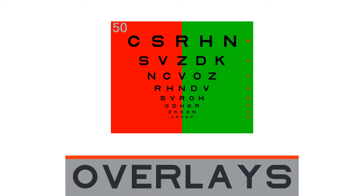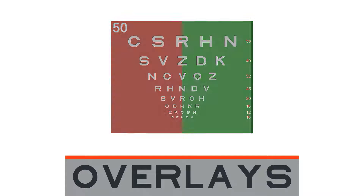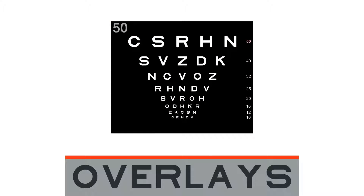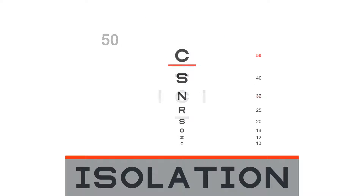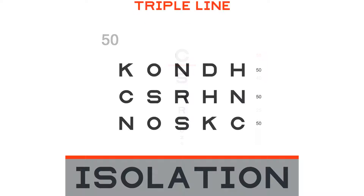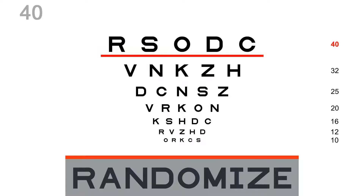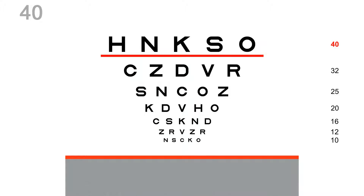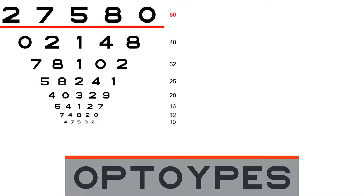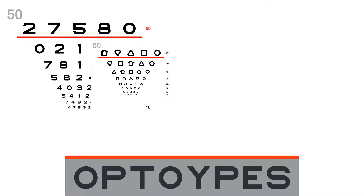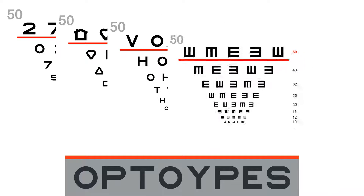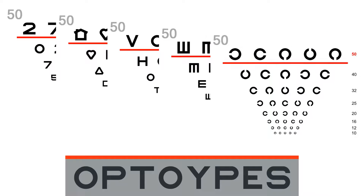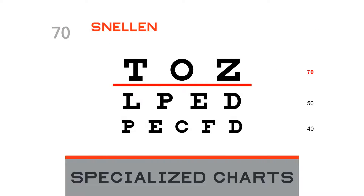The chart has overlays, can isolate letters, and randomize the letters. Choose from many optotypes, including Sloan compliant, numbers, pediatric, HOTV, E's, and C's, and specialized charts.